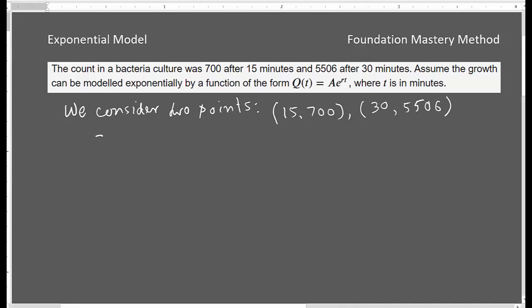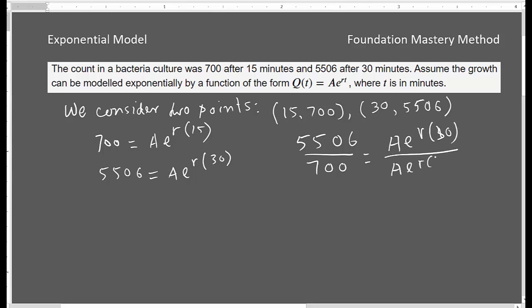Now we can say that you have 700 = Ae^(r·15) and then the second point 5506 = Ae^(r·30). So we got two equations. Now what you do, if you divide your second by the first, you see 5506 over 700 which is Ae^(r·30) and then I have Ae^(r·15).